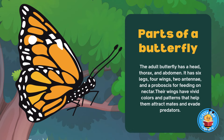Parts of a Butterfly. The adult butterfly has a head, thorax, and abdomen. It has six legs, four wings, two antennae, and a proboscis for feeding on nectar. Their wings have vivid colors and patterns that help them attract mates and evade predators.